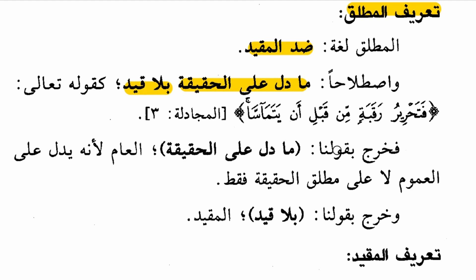Our statement 'ma dalla ala al-haqiqa' (that which points to an actuality) excludes for us the 'aam, because the 'aam points to a generality, not to the actuality of something which is unrestricted and absolute. And our statement 'bila qayd' (without a qualifying factor) excludes for us the muqayyad.